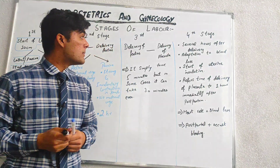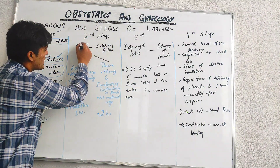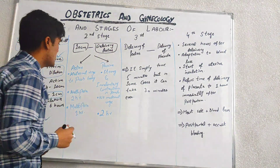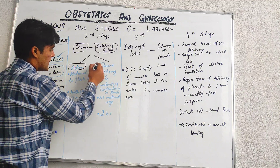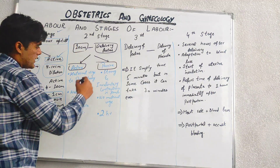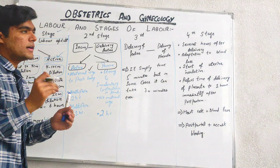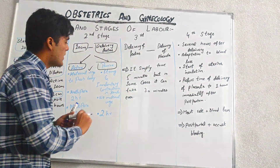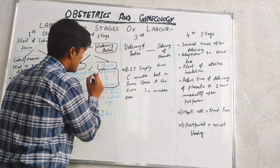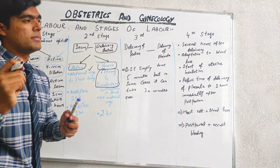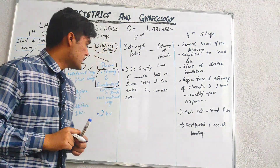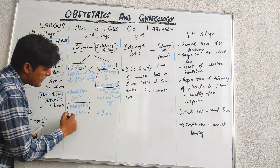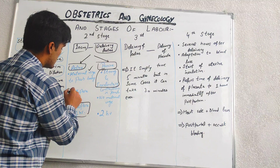The second stage of labour is basically from 10 centimetre dilation until delivery of the fetus. It also divides into two sub-stages — active and passive. The active sub-stage involves a maternal urge to push the baby outside. In the passive sub-stage, there is no maternal urge but there are strong involuntary contractions urging the mother to push the baby out. The active process takes one hour in multiparous females and two hours in nulliparous females.